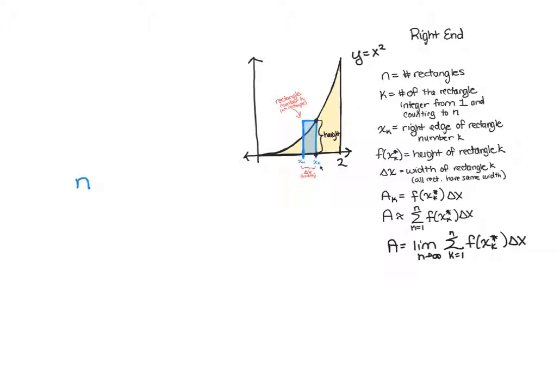So we're going to use n as our number of rectangles and we're going to let that be a variable so that we can take the limit eventually. And k is also going to stay a variable because we want to be able to think about any rectangle. But now we can start solving for things when we get to delta x and x sub k.